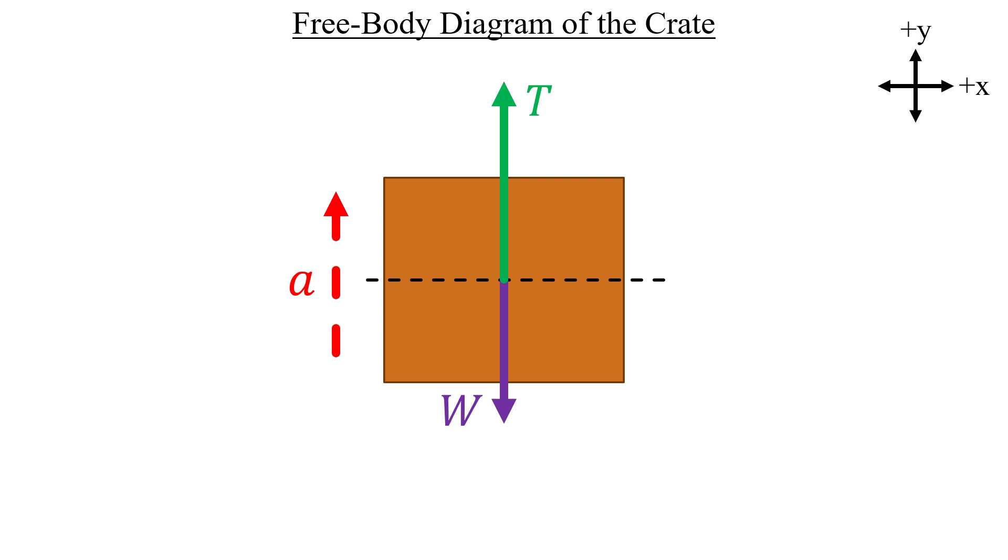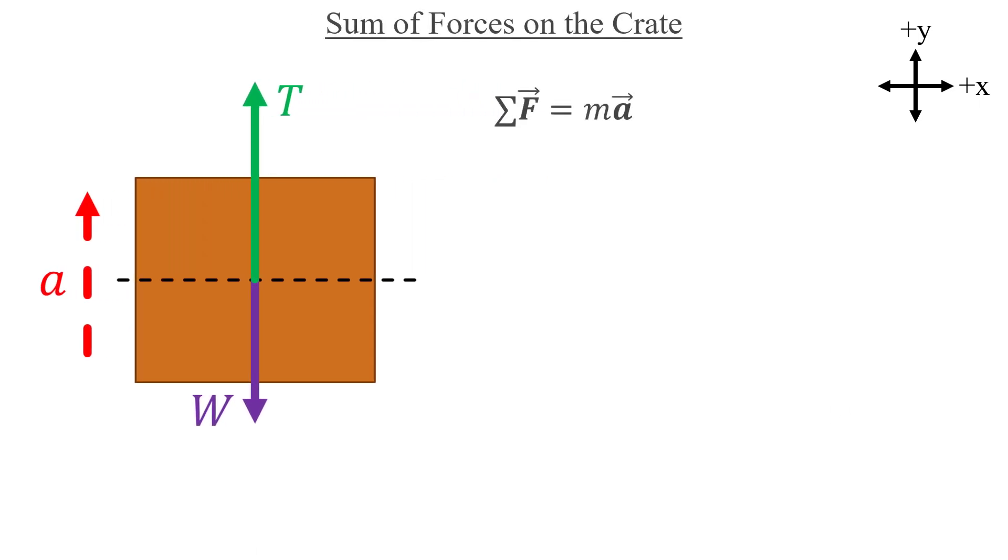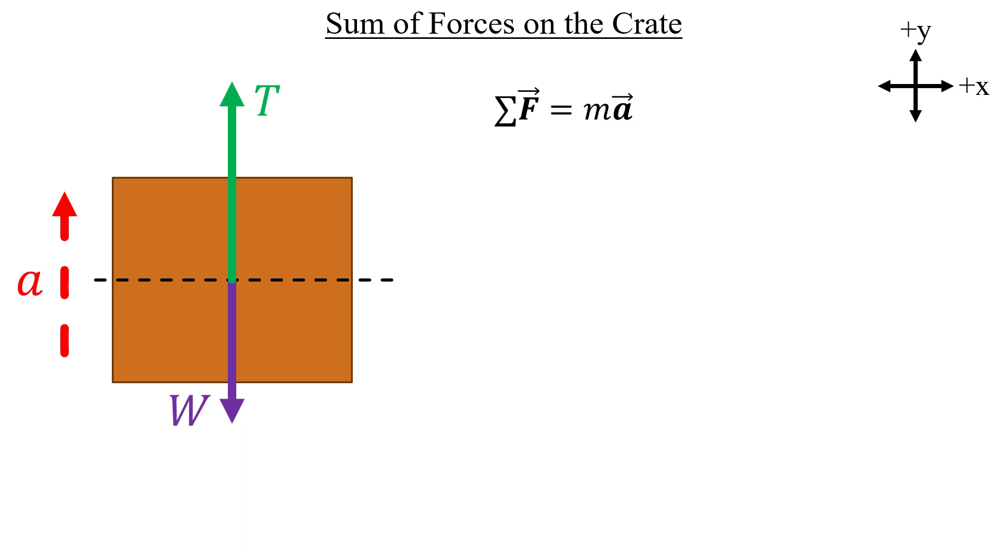There's nothing else here to account for. So we can slide all this stuff over to the side and get started on the sum of forces. In the x direction, there's clearly nothing going on there. The crate doesn't move side to side as it's being raised. So that sum is equal to zero. In the y direction, however, it's a different story. We have our positive tension and the negative weight being equal to a positive ma term.